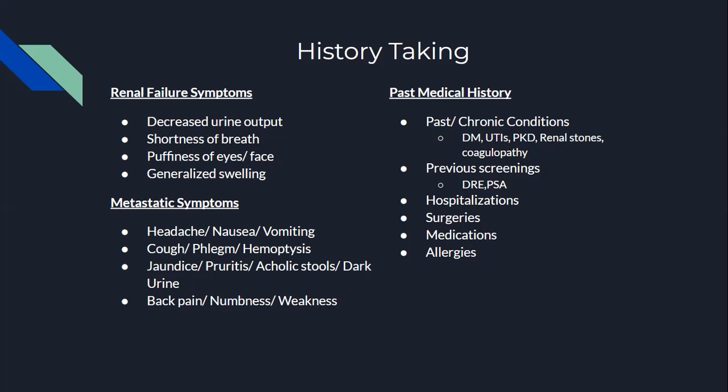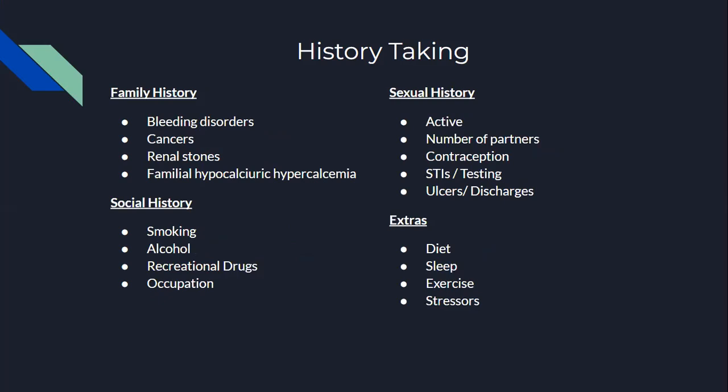Inquire about hospitalizations and any surgeries to the abdominal or pelvic region. Ask about medications, as mentioned before, and any allergies. Inquire about the patient's family history — do they know of any bleeding disorders within the family? Any cancers? Any renal stones? Do they know of familial hypocalciuria or hypercalcemia in the family?